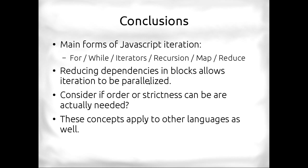In conclusion, we covered main forms of iteration in JavaScript, from for loops all the way to map and reduce, with OO iterators and recursion in between. We talked a lot about reducing dependencies in blocks in order to allow for iteration to be parallelized. When you have a block that is independent, that is only dependent on its arguments, then it can be inherently parallelized because you don't have to share state, you don't have to synchronize state. You should consider if order or strictness are actually needed when you are writing your algorithms or when you're writing your code. Because in a lot of cases, you just use the for loop because you need to loop through something. But if you use the map, you're basically implying that maybe the order doesn't matter. If you were using a map, you could wrap it in a parallel later and get it over with.